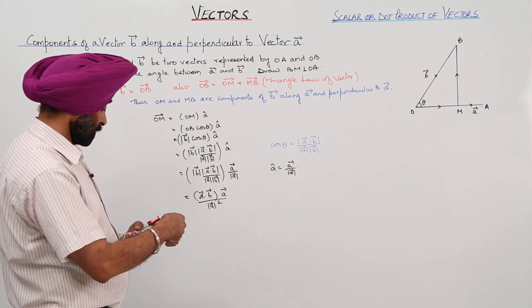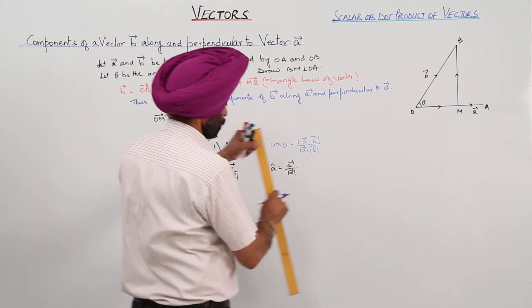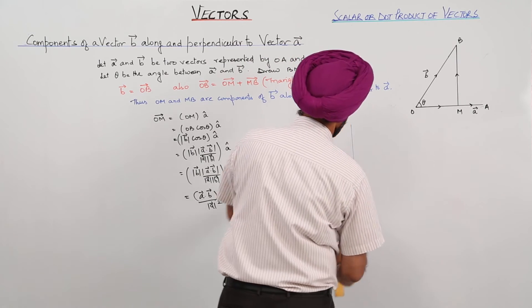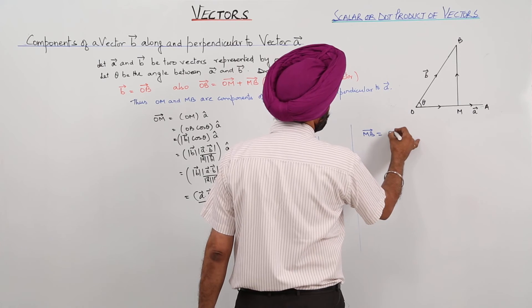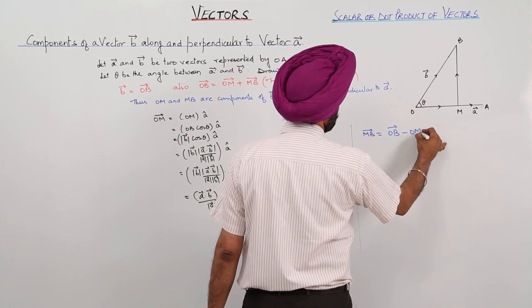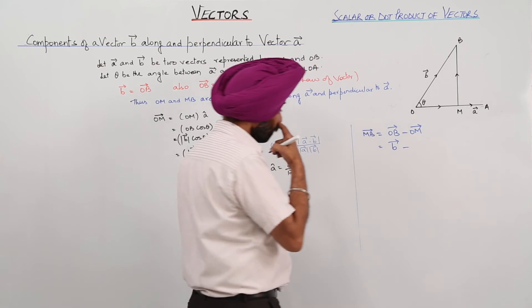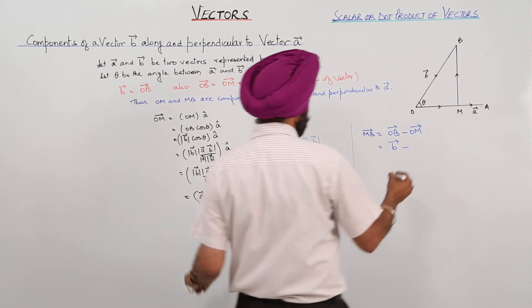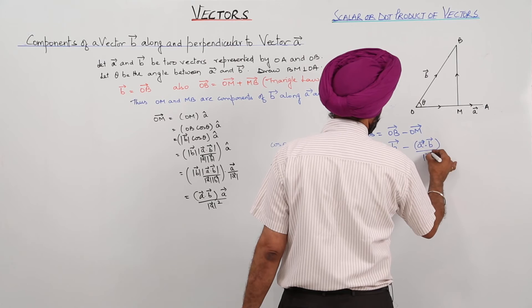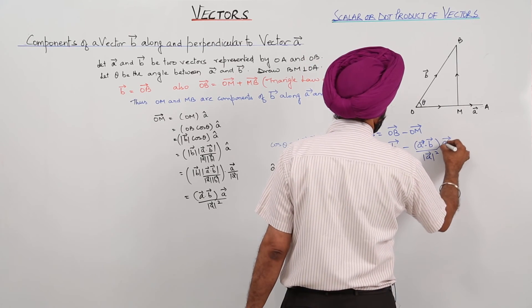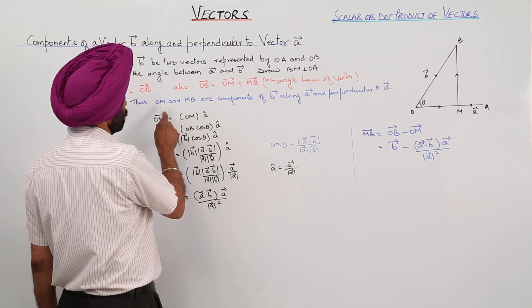Now we have OM, and now for MB. MB is equal to vector OB minus vector OM, that is, negative of vector OM. Vector OB is vector B, and negative of OM we have already got as this expression. So it is vector B minus vector A dot vector B upon magnitude of A squared times vector A. So we are getting two things: OM and MB, and that is what we want.